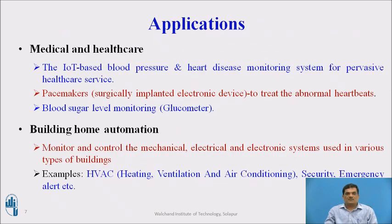Now let's discuss real-time applications of IoT across different categories. First, in medical and healthcare: IoT is used in blood pressure and heart disease monitoring systems for pervasive healthcare services, in pacemakers to treat abnormal heartbeats, and in blood sugar level monitoring. The glucometer is the best example where IoT is embedded to monitor a patient's blood sugar level. In building and home automation, IoT is used to monitor and control mechanical, electrical, and electronic systems such as heating, ventilation, air conditioning, security, and emergency alerts.